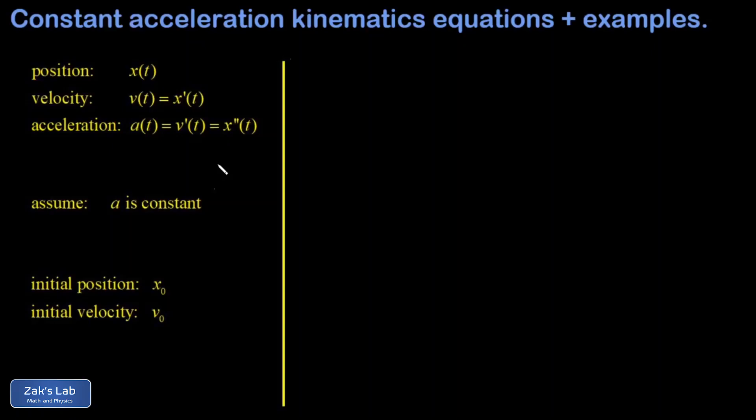In this video, we derive the standard equations for constant acceleration kinematics in one dimension. We start with a reminder of the derivative relationships between position, velocity, and acceleration, and I'll post a link to the video where we establish these by using the limit definition of the derivative.